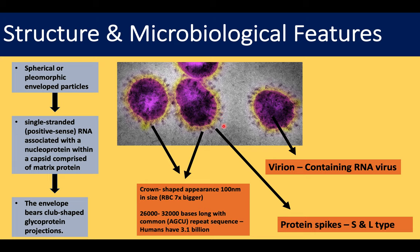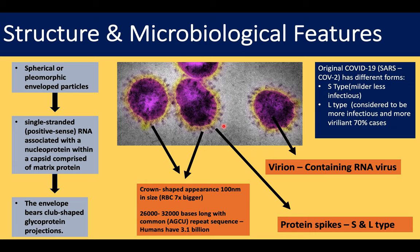The protein spikes come in two forms: the S-type, which is milder and less infectious, and the L-type, which is more infectious and virulent. A Chinese scientist as of the 5th of March reported that most cases in China were found to have L-type protein spikes, which explains why case numbers in China, especially in Wuhan, are much higher than anywhere else in the world.